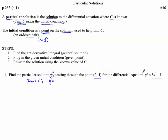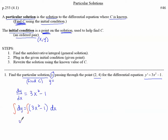So let's take our Y' and write it as DY/DX equals 3X squared minus 1. Rewriting it in differential form by multiplying by DX: DY equals (3X squared minus 1) DX, and then taking the antiderivative to make the derivative go away. We get Y equals X cubed, because the derivative of X cubed is 3X squared, minus X plus C.